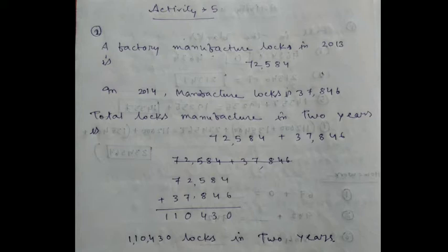Now Activity 5, number 2. A factory manufactured locks in 2013: 72,584. In 2014, manufactured locks: 37,846. The locks manufactured in two years is 72,584 plus 37,846.